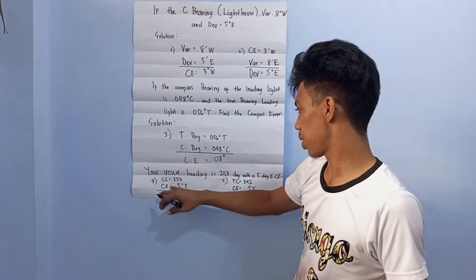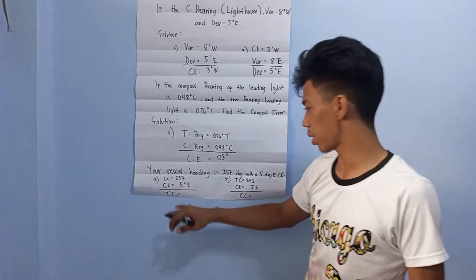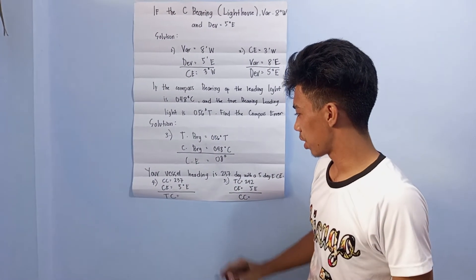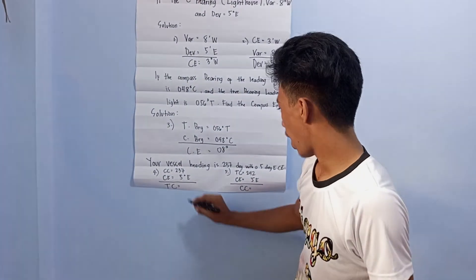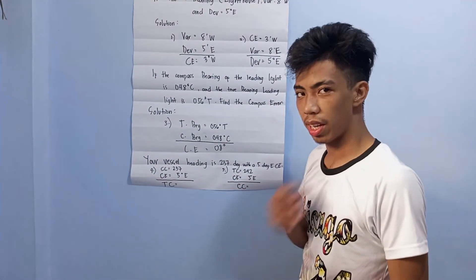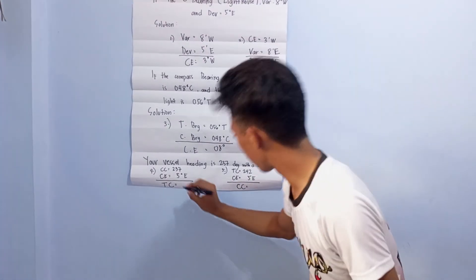The compass course is 237 and compass error is five degrees. To get the true course, add the compass error and compass course. The answer is 242 degrees.